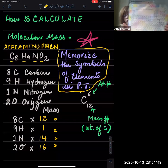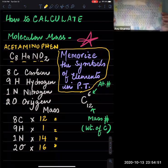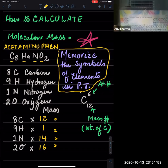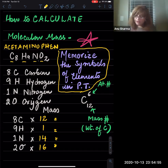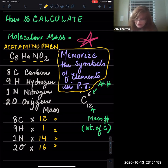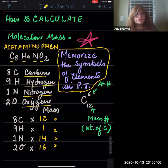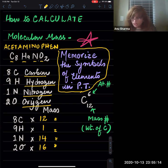So C stands for carbon, H stands for hydrogen, N stands for nitrogen, and O stands for oxygen. In the acetaminophen molecule, we see there are eight carbons, nine hydrogens, one nitrogen, and two oxygens. Now we are going to calculate the molecular mass of this molecule.